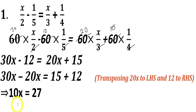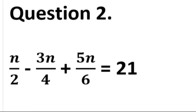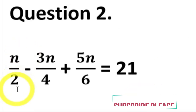x ज्ञात करने के लिए 10 को transpose करेंगे right side में, 27 के denominator में जाएगा। तो प्राप्त होगा x is equal to 27 upon 10. This is the answer.